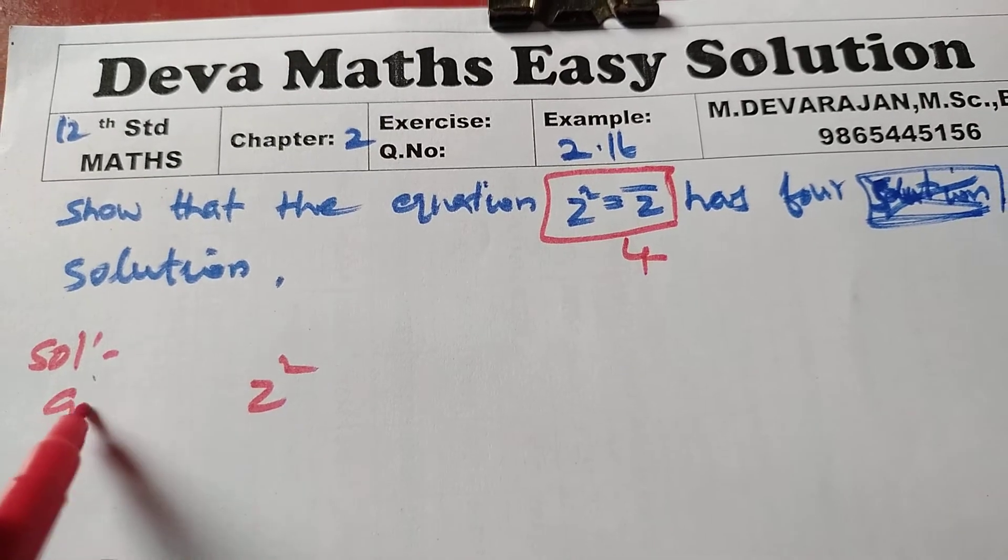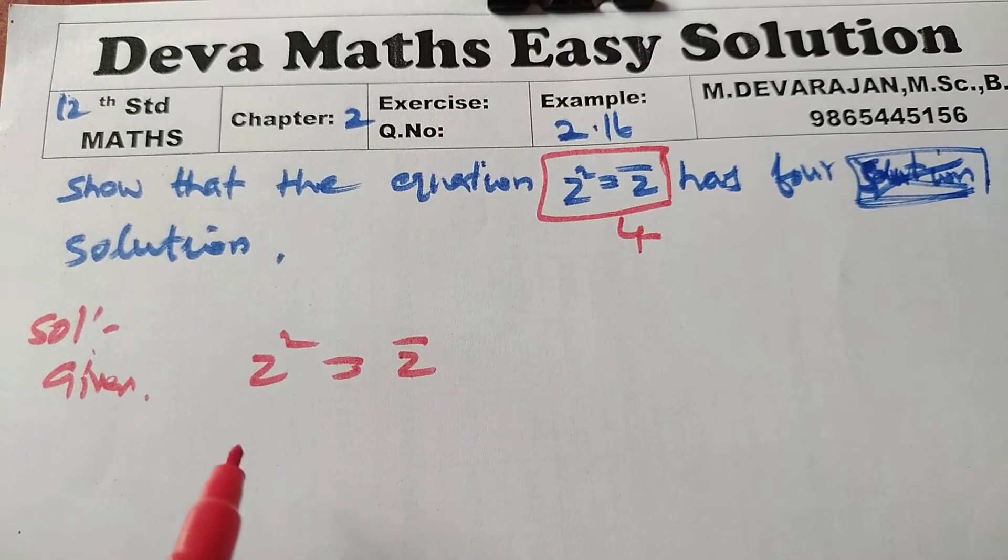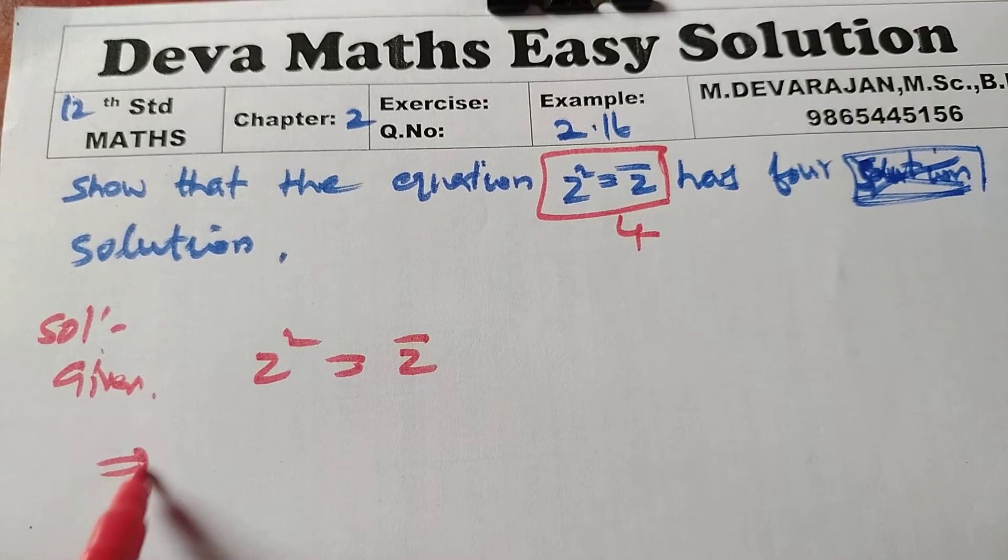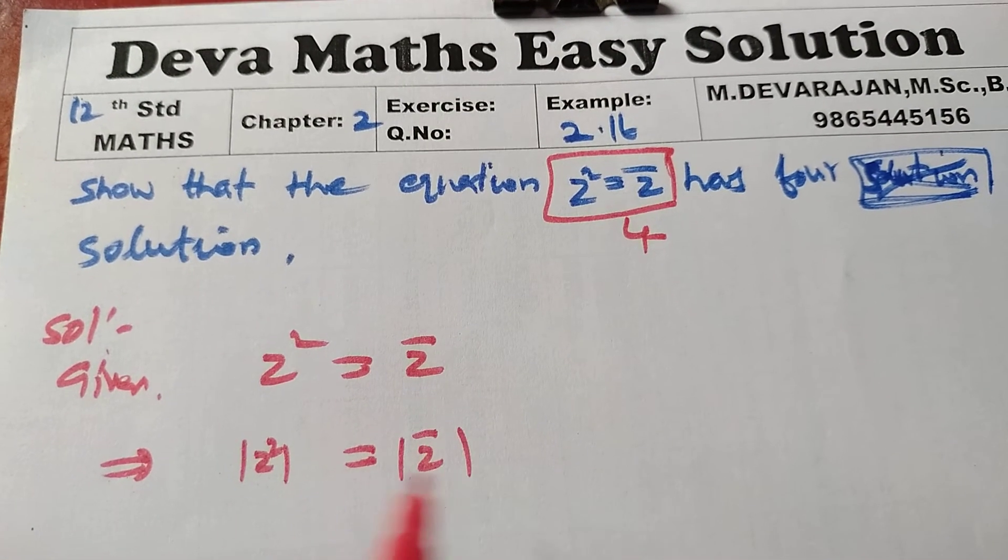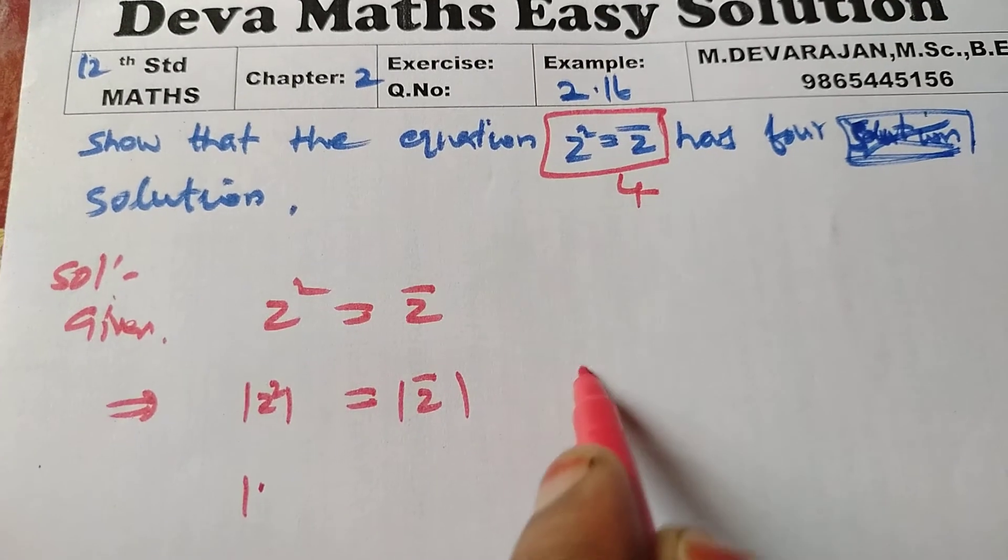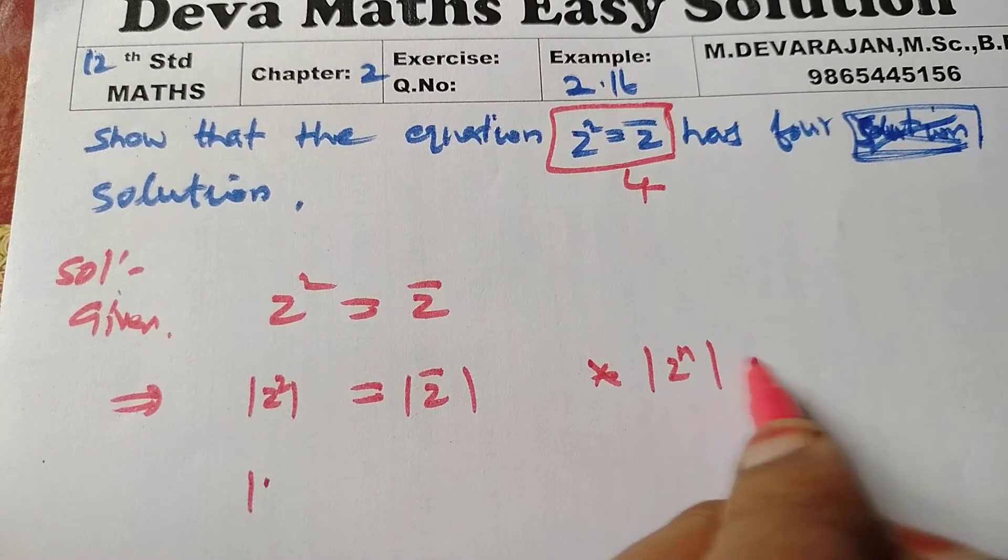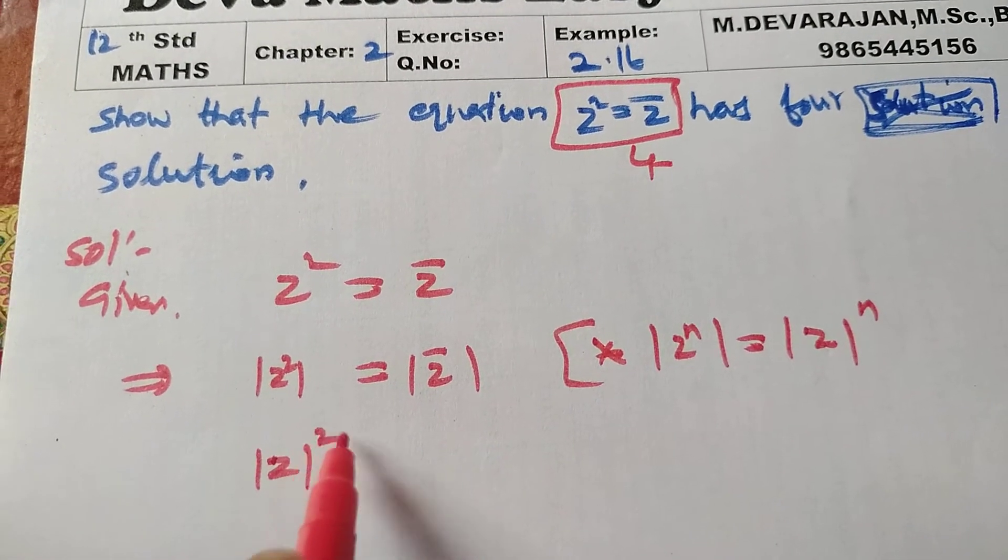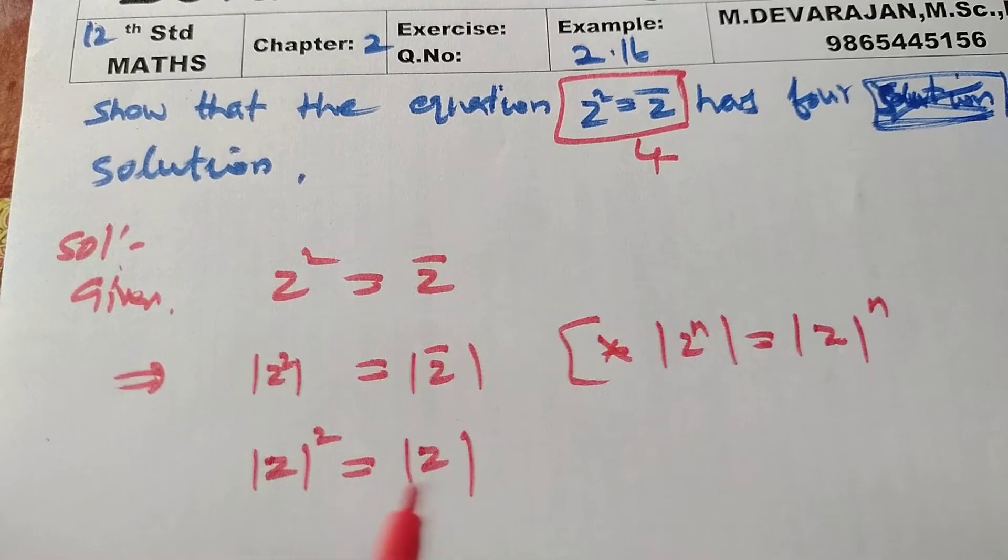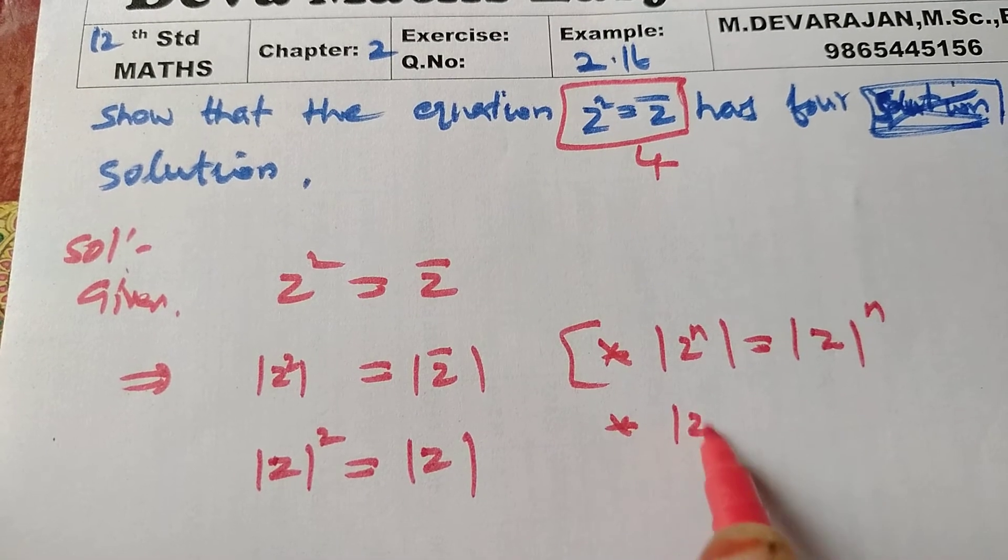Given equation: z squared equal to z bar. We can also write z squared equal to z bar. Now z whole squared equal to modulus of z whole squared.